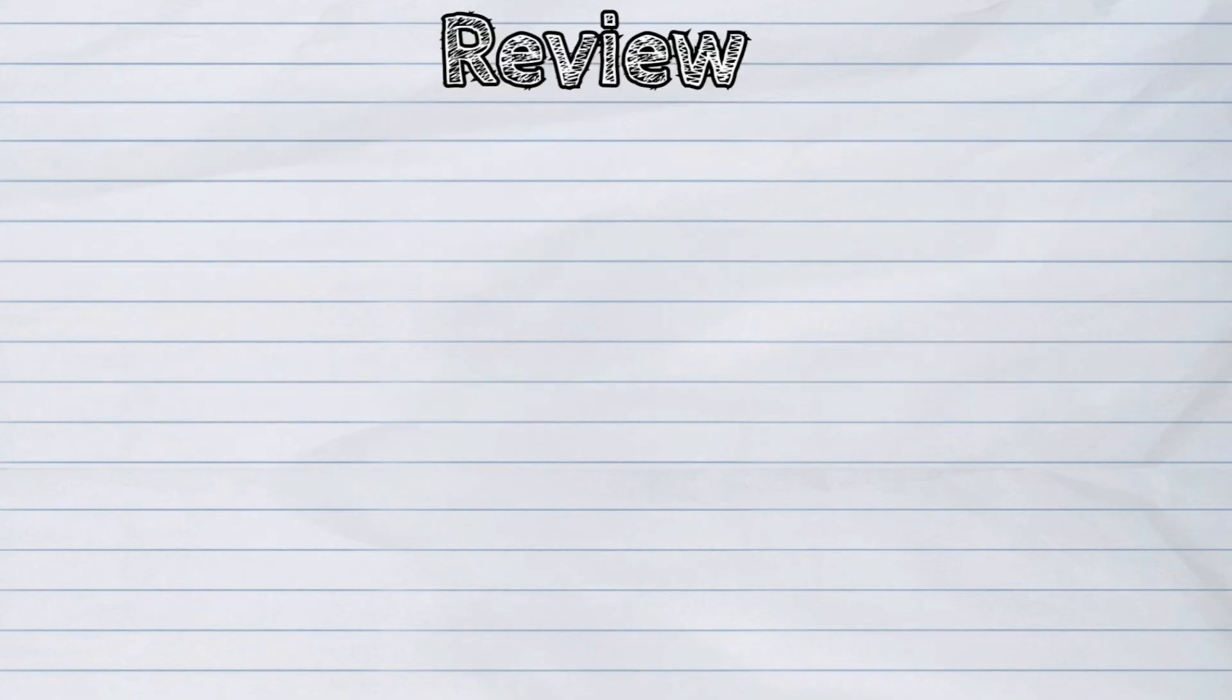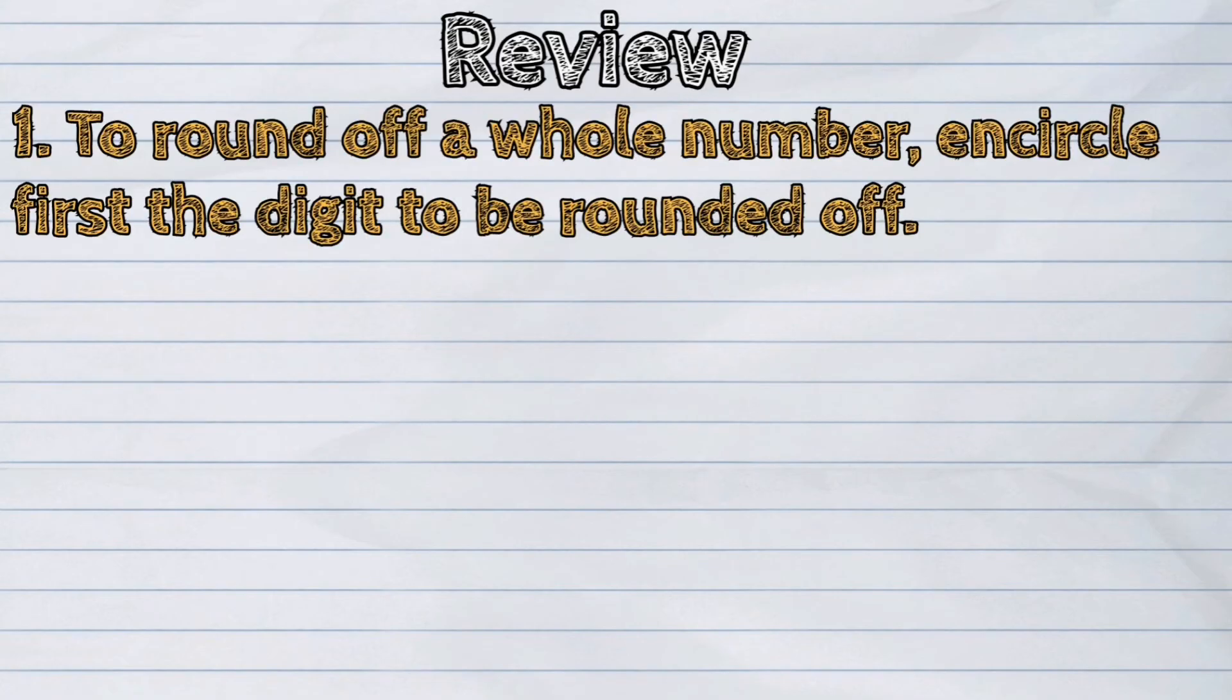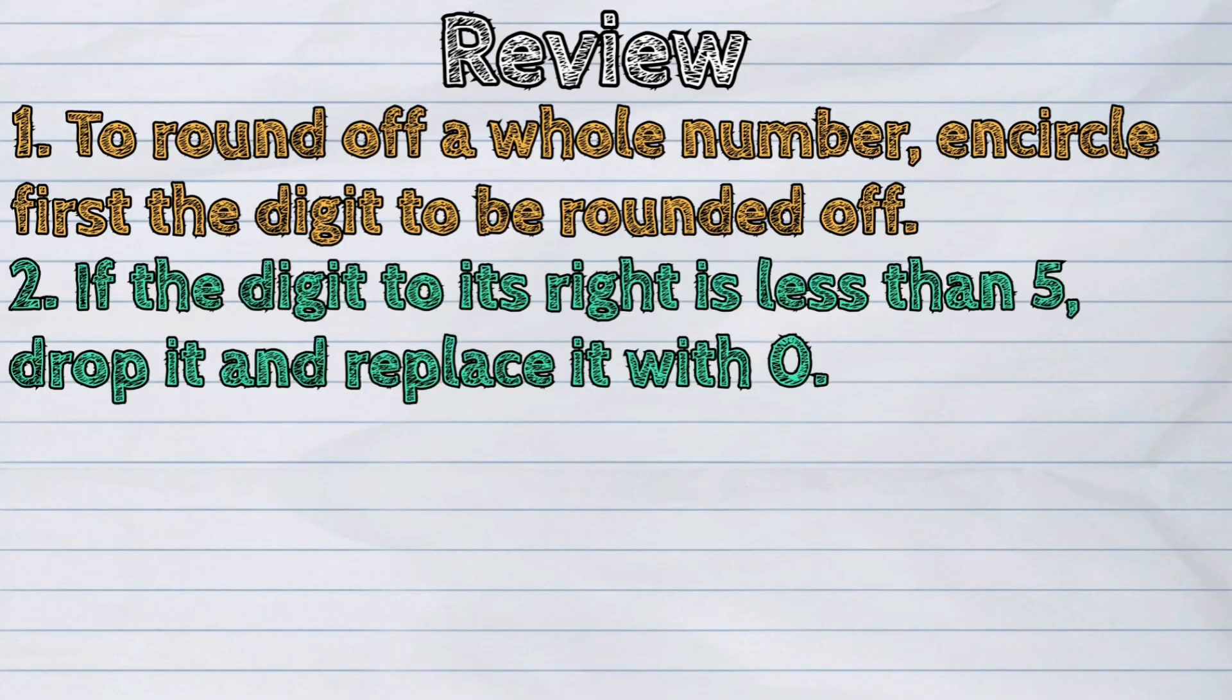Let's review. To round off a whole number, first encircle the digit to be rounded off. If the digit to its right is less than 5, drop it and replace it with 0.